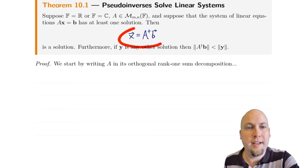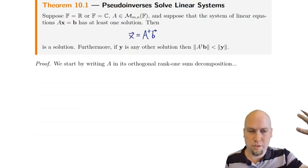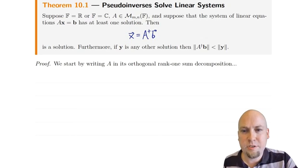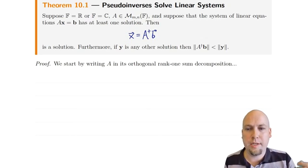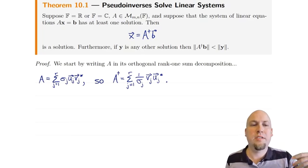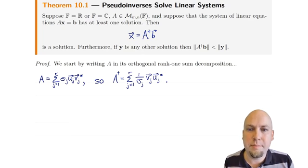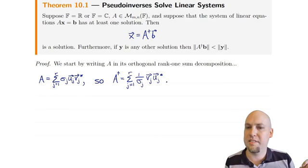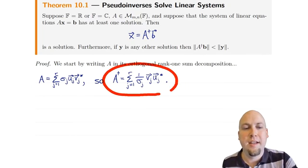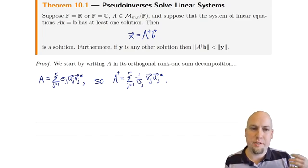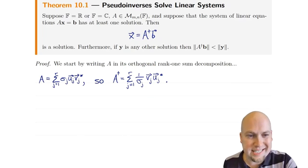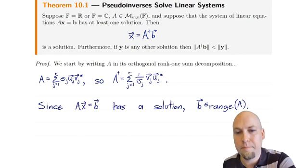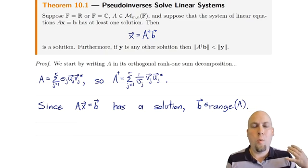Certainly this is true if A is invertible — we already know that from the previous class — but why is it true in general? The way we're going to prove this is we're going to start by writing things down in their orthogonal rank-1 sum decomposition. Write down some orthogonal rank-1 sum decomposition of your matrix A, and then do the same for A†, the pseudo-inverse, just by definition.